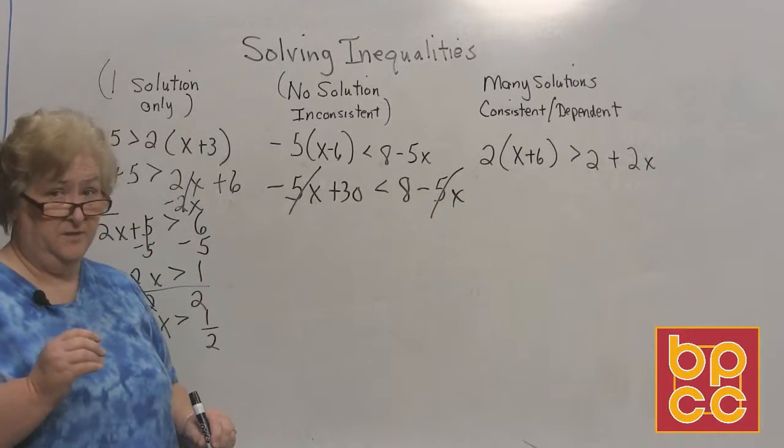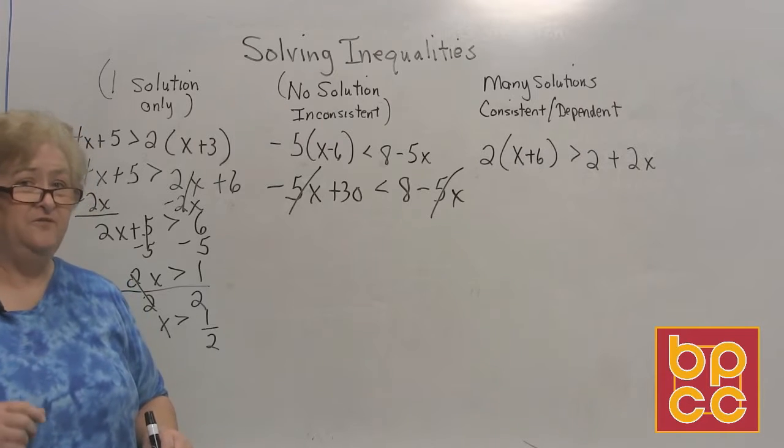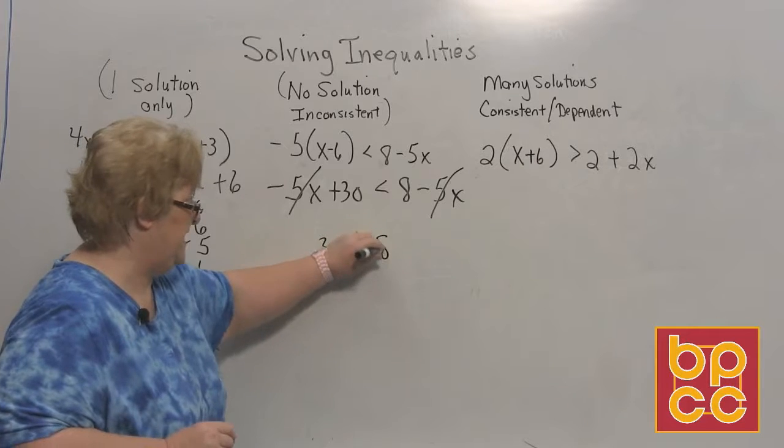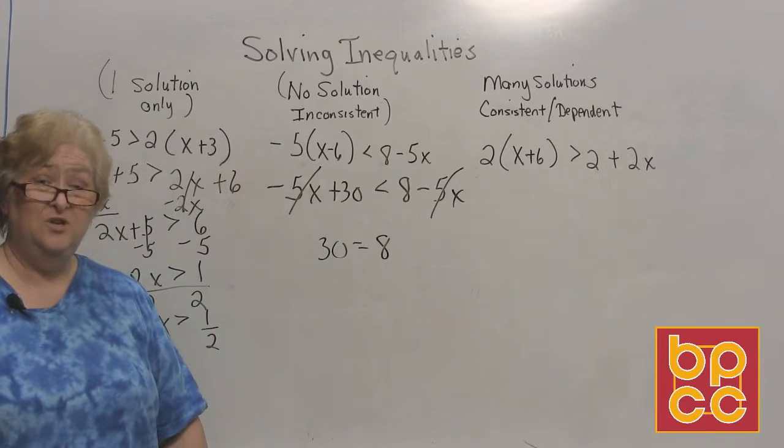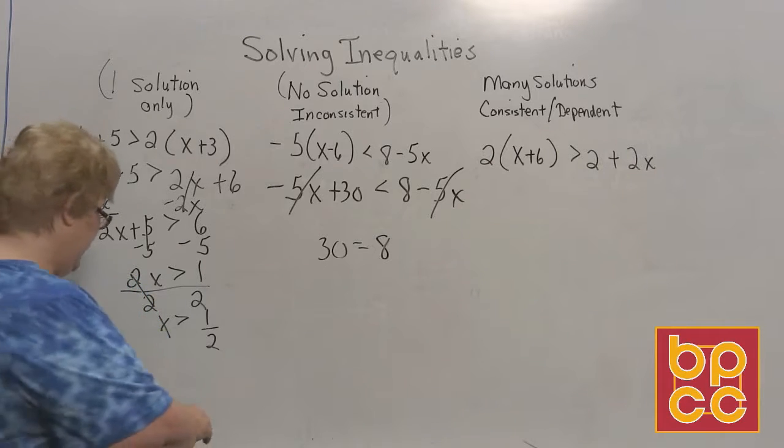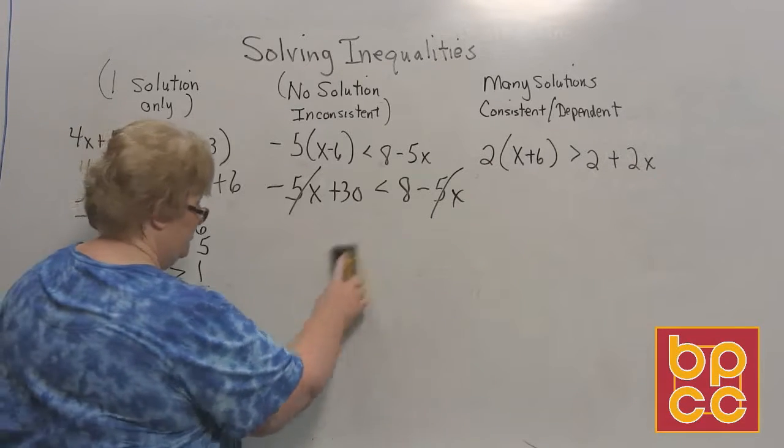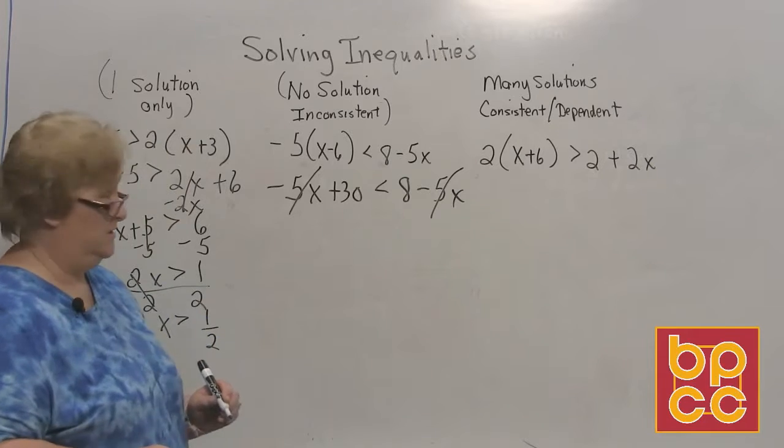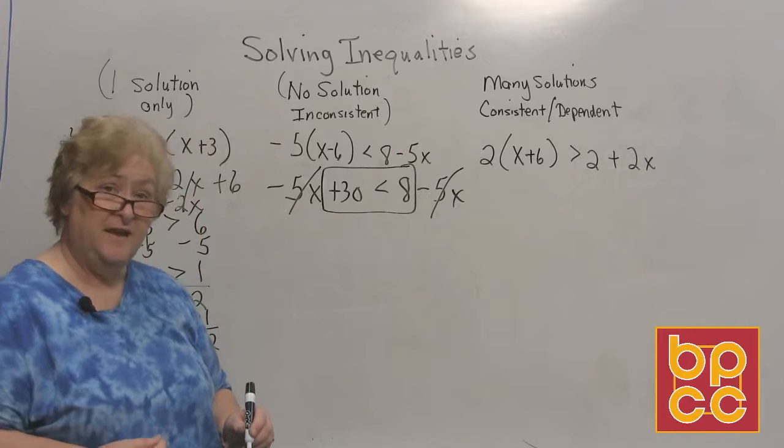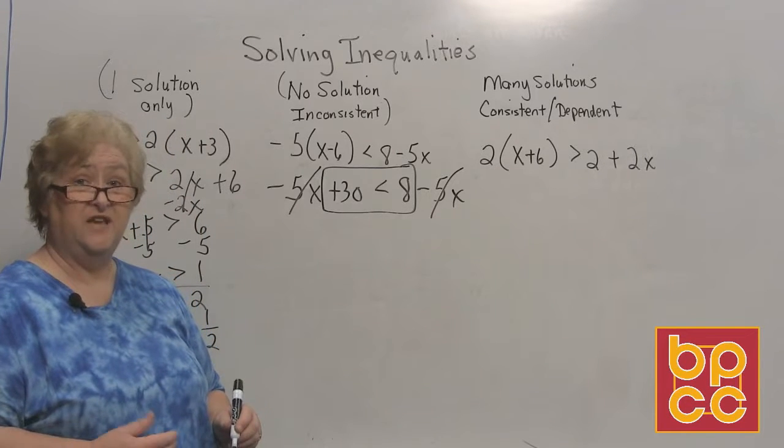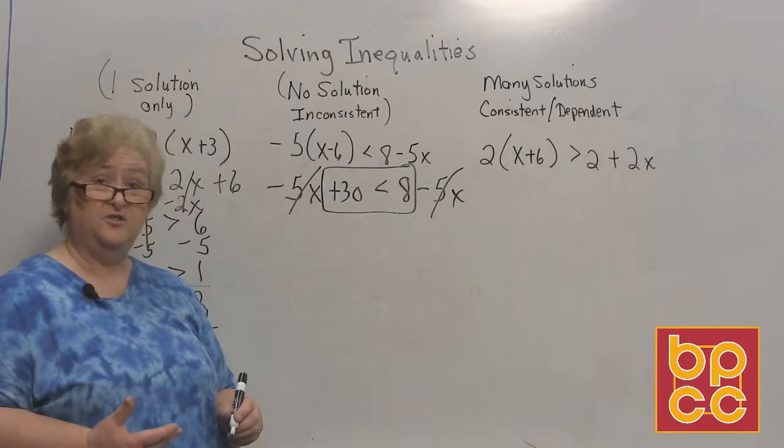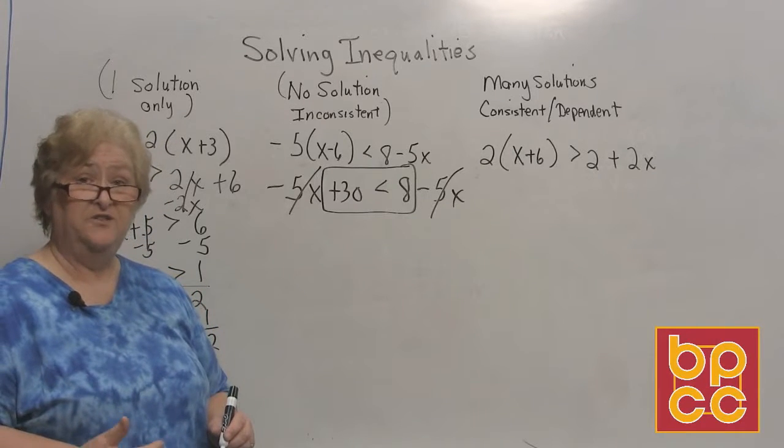Now let's take a look at something here. In the past, if this had been an equation, you would have had a 30 equals an 8. You had no x. You'd say no solution. But you cannot necessarily say that. We have to read what is left since we're dealing with an inequality. You see this statement right here. If that statement is true, then we're going to say many solutions, all real numbers. If the statement is false, then there is no solution for this inequality.